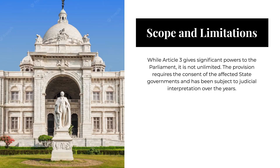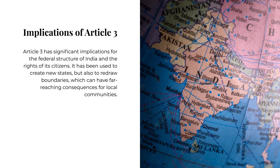While Article 3 gives significant powers to Parliament, it is not unlimited. The provision requires the consent of the affected state governments and has been subject to judicial interpretation over the years. Article 3 has significant implications for the federal structure of India and the rights of its citizens — it has been used to create new states, but also to redraw boundaries, which can have far-reaching consequences for local communities.